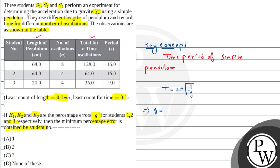So g equals 4π² L by T². Del g by g equals del L by L plus 2 times del T by T.